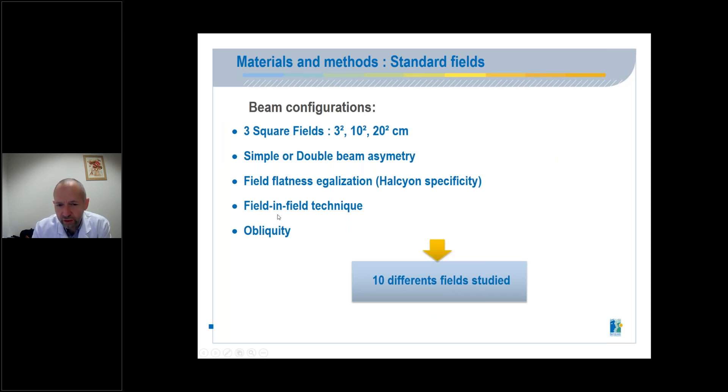For standard fields, we analyze various configurations. Three square fields with three, 10, and 20 centimeter sides. Fields with simple or double asymmetry. Field flatness equalization, which is the specificity of the Halcyon machine. Field and field technique were also studied. And finally, the surface obliquity wire was analyzed. This corresponds to about 10 different fields for this study.